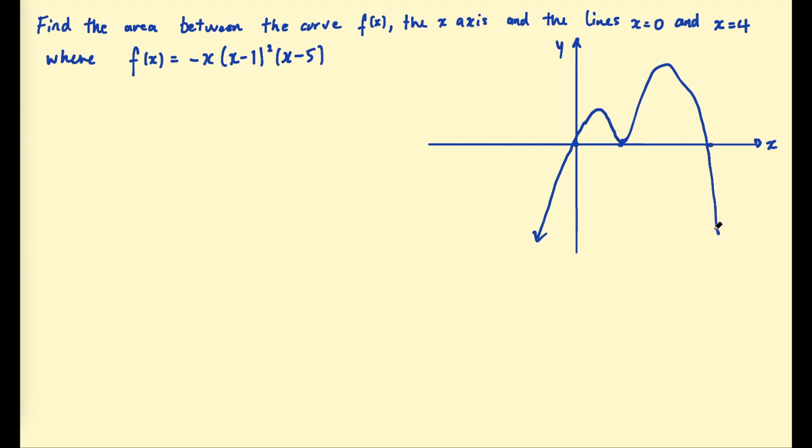So we know the graph must come up like this and go through (0,0). Then because there's a double root at positive 1, it must touch the x-axis there. So I should label my axes. Touches the x-axis there, and then it must go up and through the x-axis, such as this. So that's all we really need, just to understand if the area is above or below the x-axis. And we're looking for the area from 0 to 4, so that total area.